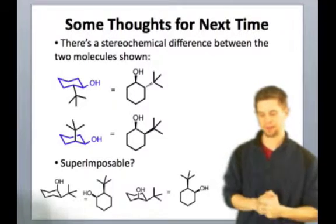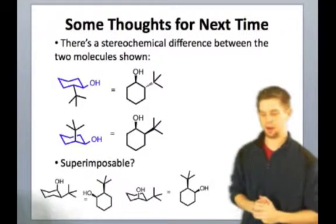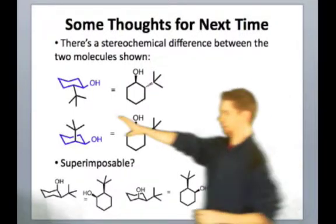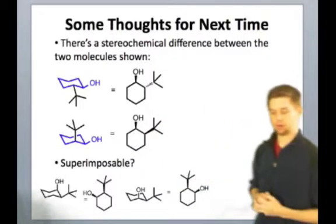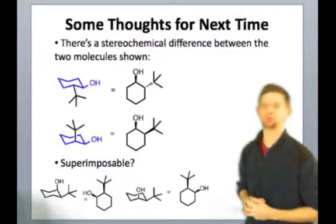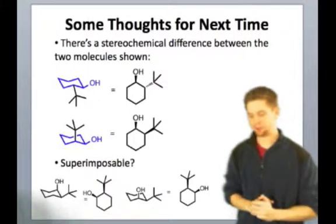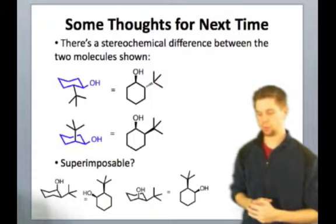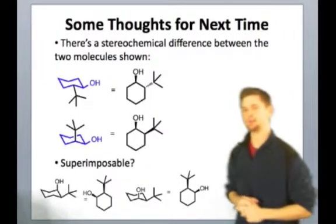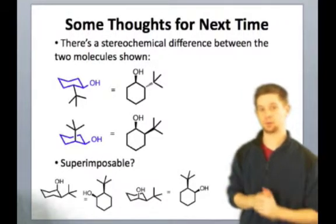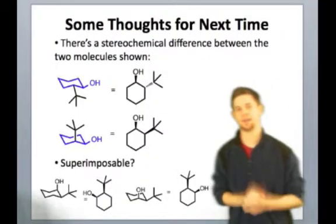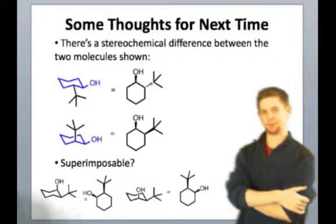Something I want you to think about for next time is the stereochemistry of these disubstituted cyclohexanes. What you're looking at here are chair drawings on the left and two-dimensional line-angle drawings on the right of tert-butyl cyclohexanes. Ask yourself: what's the stereochemical relationship between those two molecules? There's definitely a difference between them — they have all the same connectivity, so we would call those stereoisomers. Ask yourself: are they superimposable? Are they mirror images of one another? Then you'll come to a conclusion about their stereoisomers relationship.